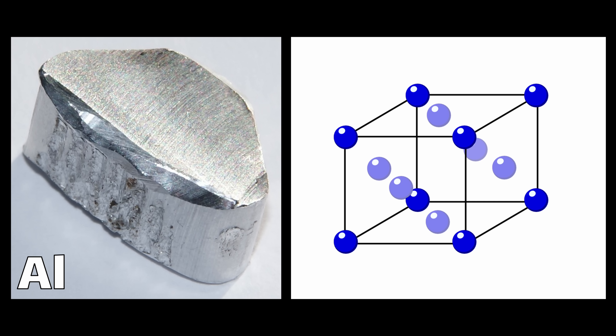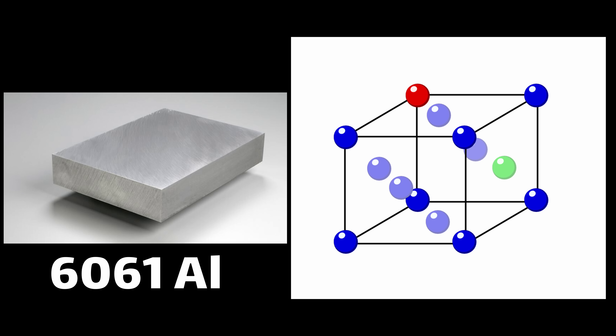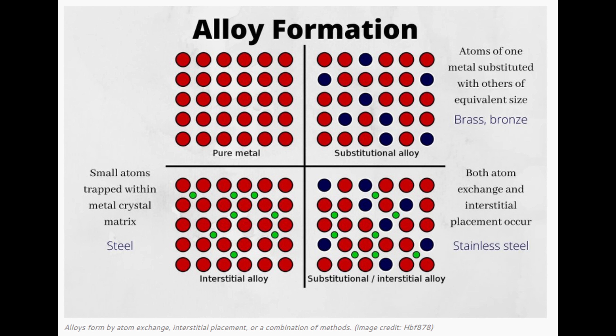When we start alloying in additional elements, those elements will replace one of the positions on the cube. Maybe we'll replace this corner with a silicon and replace that face with a magnesium — this will form a 6061 style aluminum alloy. This is known as substitutional alloying, where you're substituting in individual atoms at select places around the crystal.